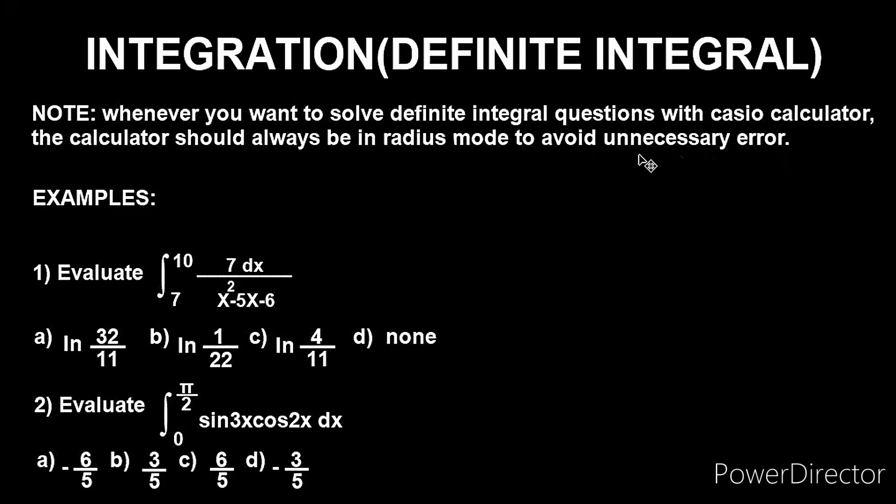Having known that, let's look at the examples I have here and solve them together. Example 1 here says evaluate the integral from 7 to 10 of 7dx over x squared minus 5x minus 6. So right now let's bring the Casio calculator and solve this question together.